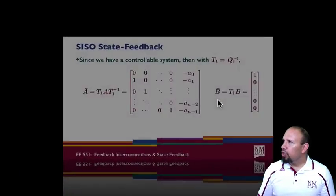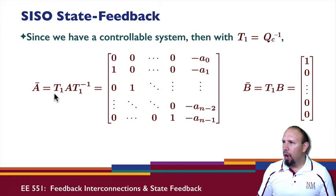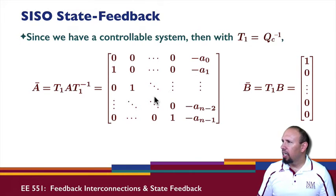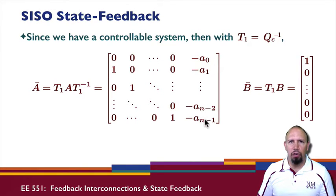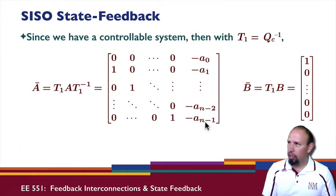If we use the inverse of the controllability matrix as a transformation matrix and form A-bar, we can show that we get a companion matrix for our new A matrix, and here's our B-bar. So we have a companion matrix, and the characteristic polynomial coefficients appear in this column. This is the controllability canonical form that we had talked about before.